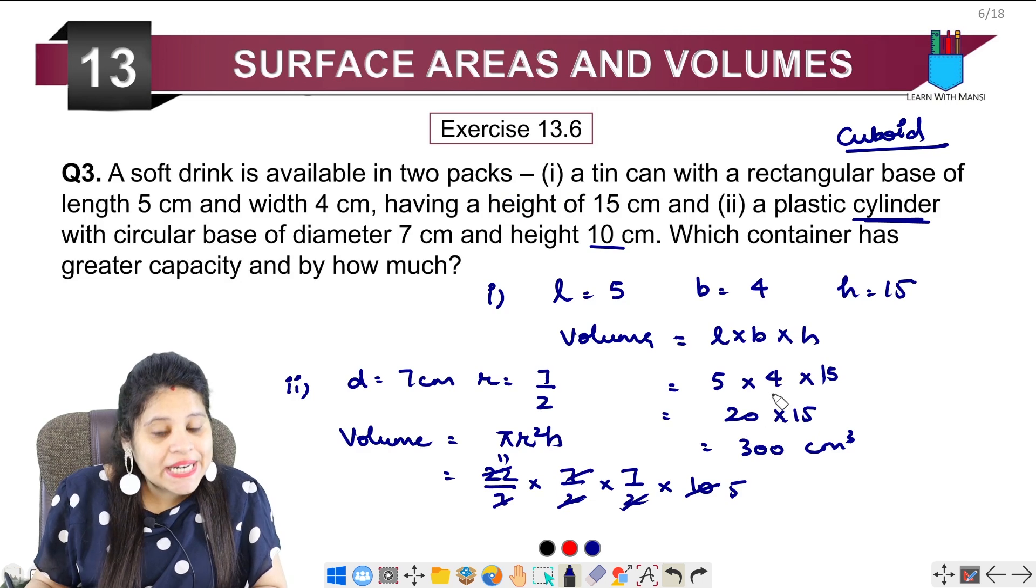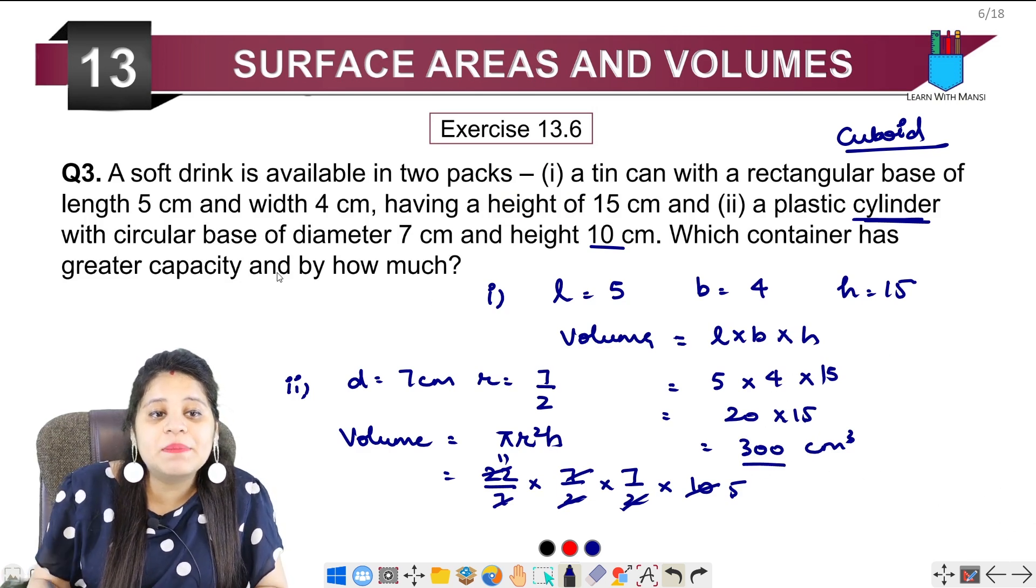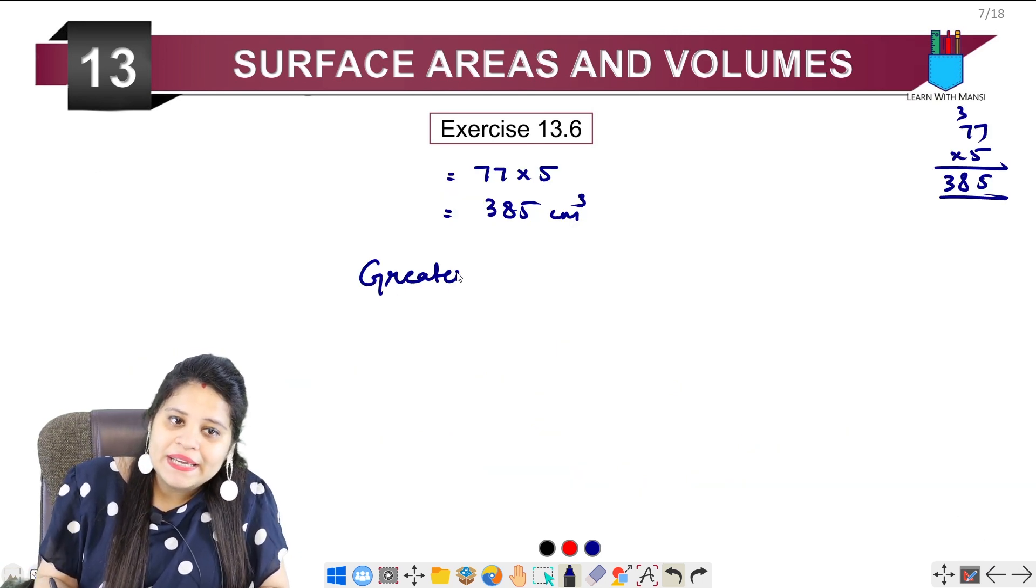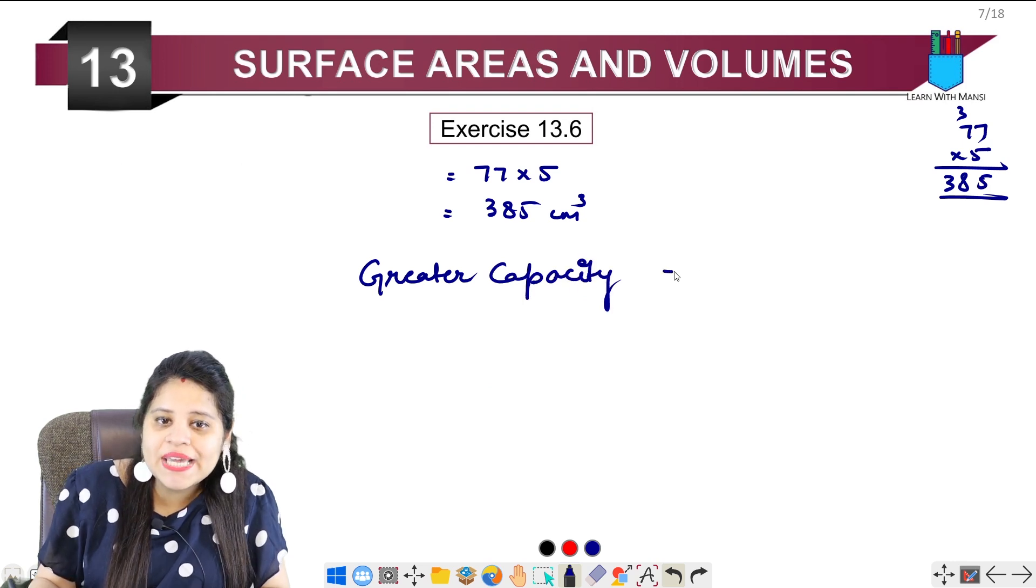Now see, the cylindrical container is 385 and the cuboid is 300. We need to find which has greater capacity. So if we talk about greater capacity, the greater capacity will be the cylinder.